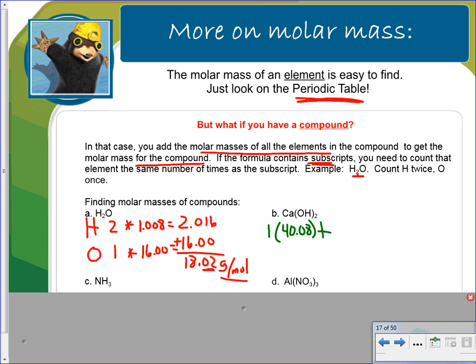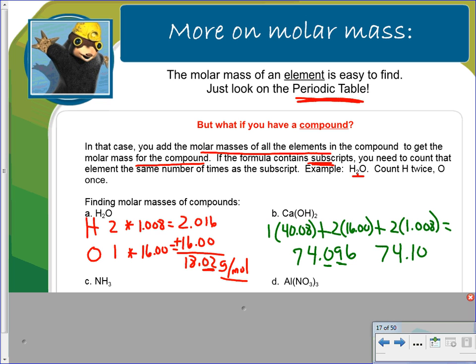How many oxygens do I have? Well, this 2 is multiplied to the subscripts in here, and there's an understood one here, so 2 times 1 is 2 — we have 2 oxygens. Look on the periodic table: 16.00 for one oxygen. Plus then you have 2 hydrogens, and hydrogen is 1.008. This setup is similar to what we did with average atomic mass. When you do that, your calculator gives 74.096, but we carry out two decimal places, so that's 74.10 because the 9 rounds up. You end up with grams per mole.